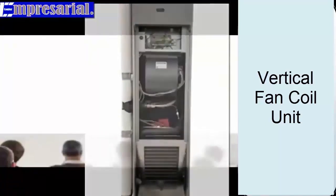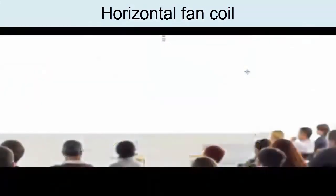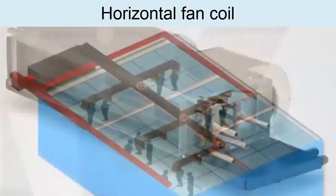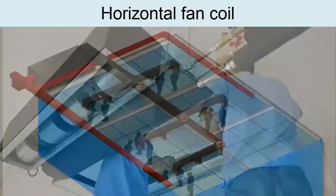2. Horizontal fan coil: The horizontal units are designed to be placed mainly in false ceilings, concealed, together with an air conditioning duct system. When, in addition to controlling temperature and humidity, it controls the regulation of air renewal and has a filtering system capable of retaining very small particles, we consider that the fan coil is an air conditioner. How is a fan coil installed?